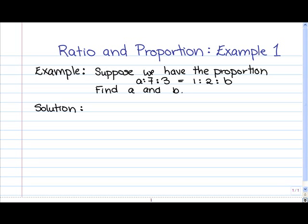In this video, we're going to look at an example of ratio and proportion. Specifically, in this example, we're given the proportion that a:7:3 = 1:2:b, and we're asked to solve for the variables a and b.